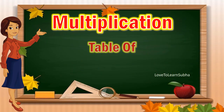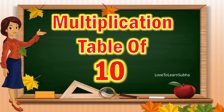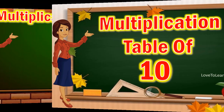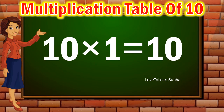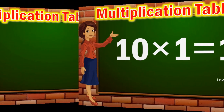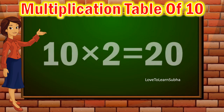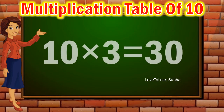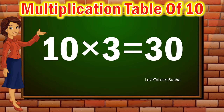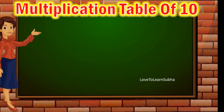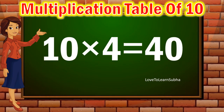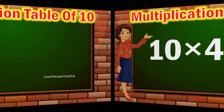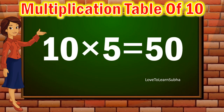Hello kids, today let us learn about the multiplication table of ten. Now let's get started. Ten ones are ten, ten twos are twenty, ten threes are thirty, ten fours are forty, ten fives are fifty.